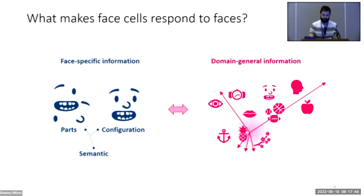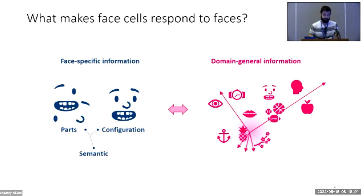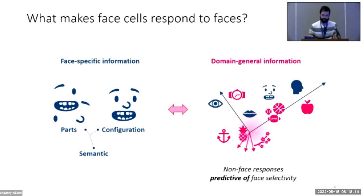In this framework, face cells could be considered directions in a high-dimensional shape or texture space on which faces tend to project higher — hence the face selectivity — but other than the direction, there is nothing fundamentally different from other neurons. This also means that non-face images vary along the same attributes that determine face selectivity, and so the consequence is that non-face responses should be informative about how face-selective a neuron is.